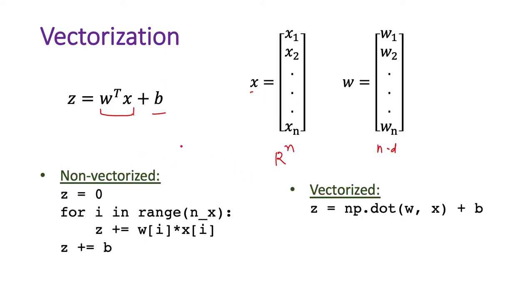To do this calculation in a non-vectorized version, we initialize variable z to 0, then run a for loop nx times (where nx denotes the number of features), multiply w[i] and x[i], and keep adding to z. Finally, after the loop ends, this gives us the w transpose x part, and we add b to it.